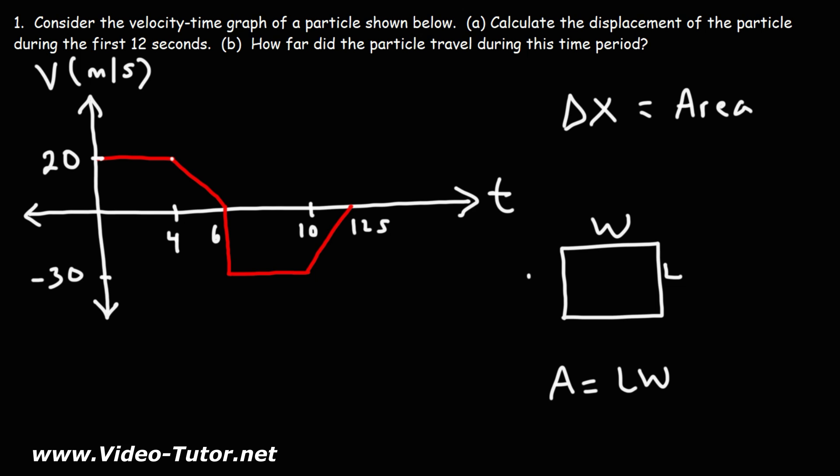Now let's say if we want to calculate the displacement during the first 4 seconds. The velocity is the length of the rectangle, and the time is the width of that rectangle. So if we replace L with V, W with T,